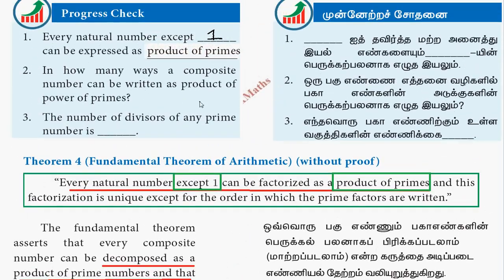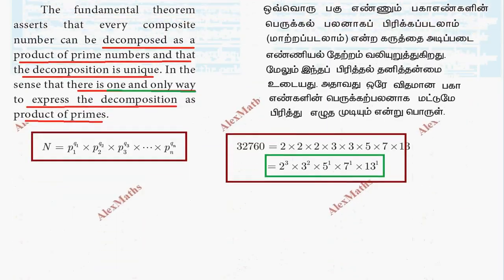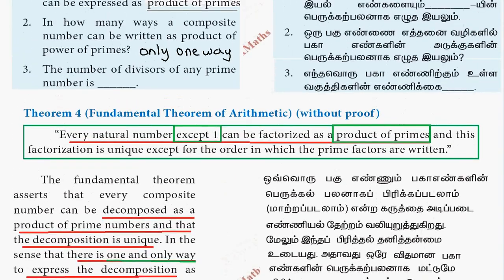In how many ways can a composite number be written as a product of power of primes? Only one way.